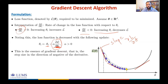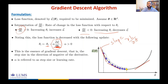Alpha is referred to as the step size or learning rate. When alpha is too small, you take smaller steps and will eventually reach the optimal point, but it will take more iterations to get there — gradient descent can be slow when alpha is too small.